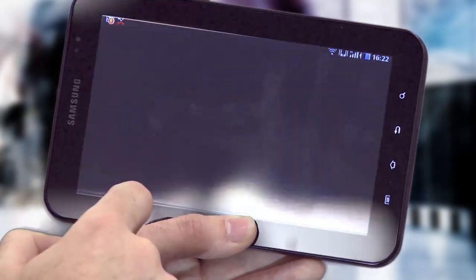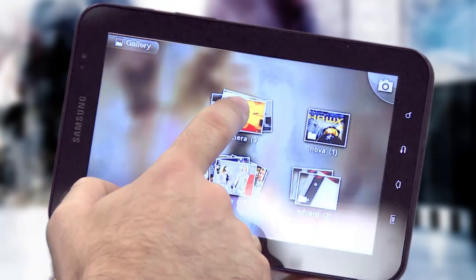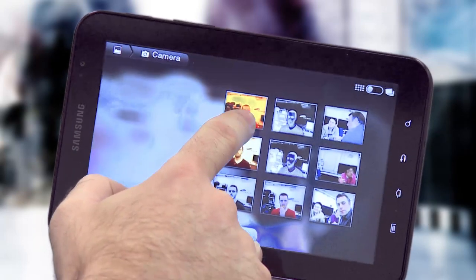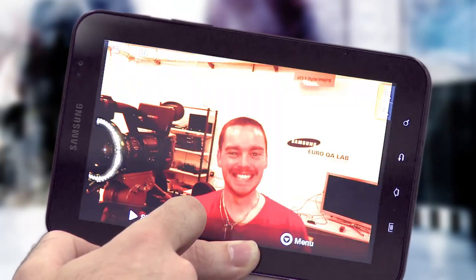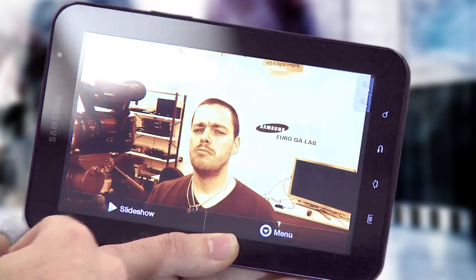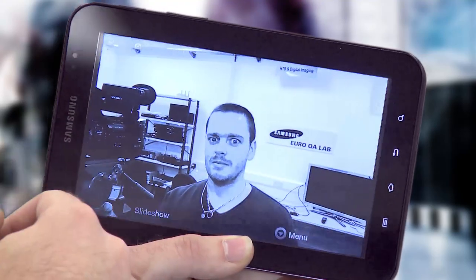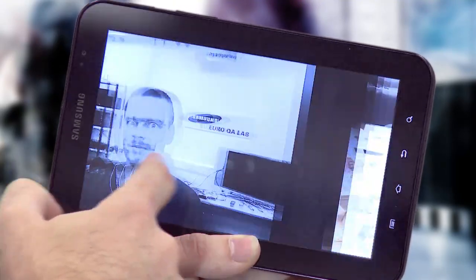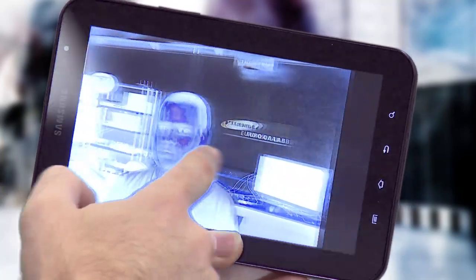So photographs. We've got the gallery widget here. If we bring that up, we can see we've got a slideshow, and we can double tap to zoom in and double tap to zoom back out, or we can zoom in by pinching to zoom, like so.